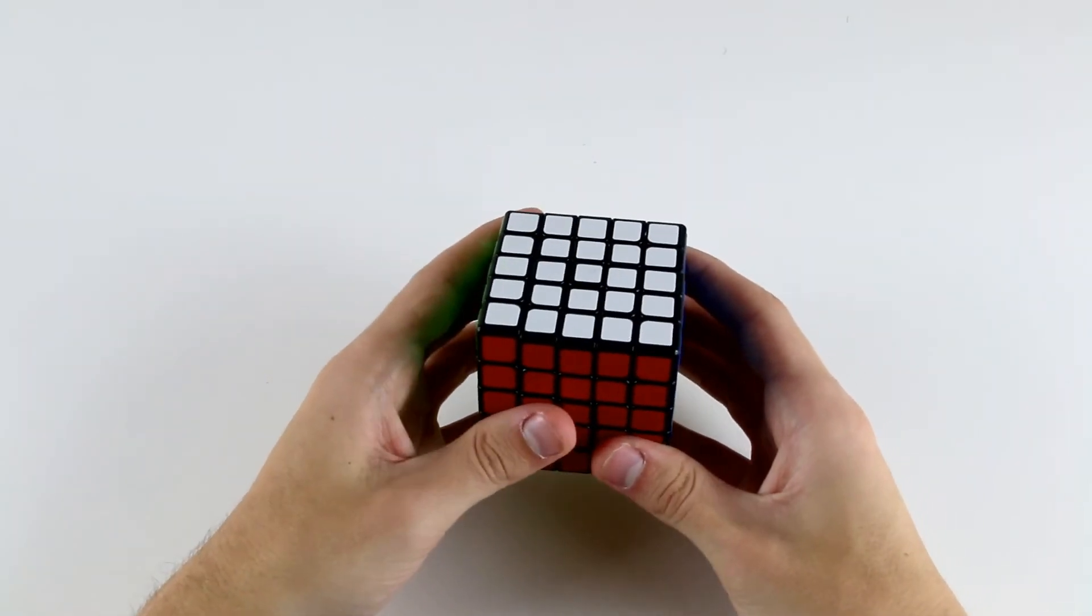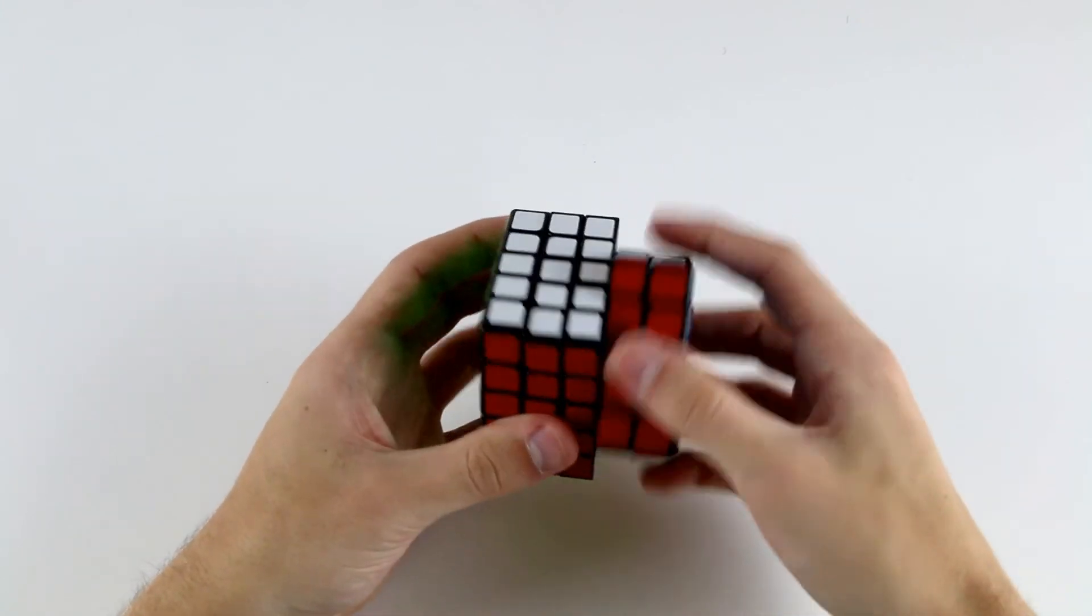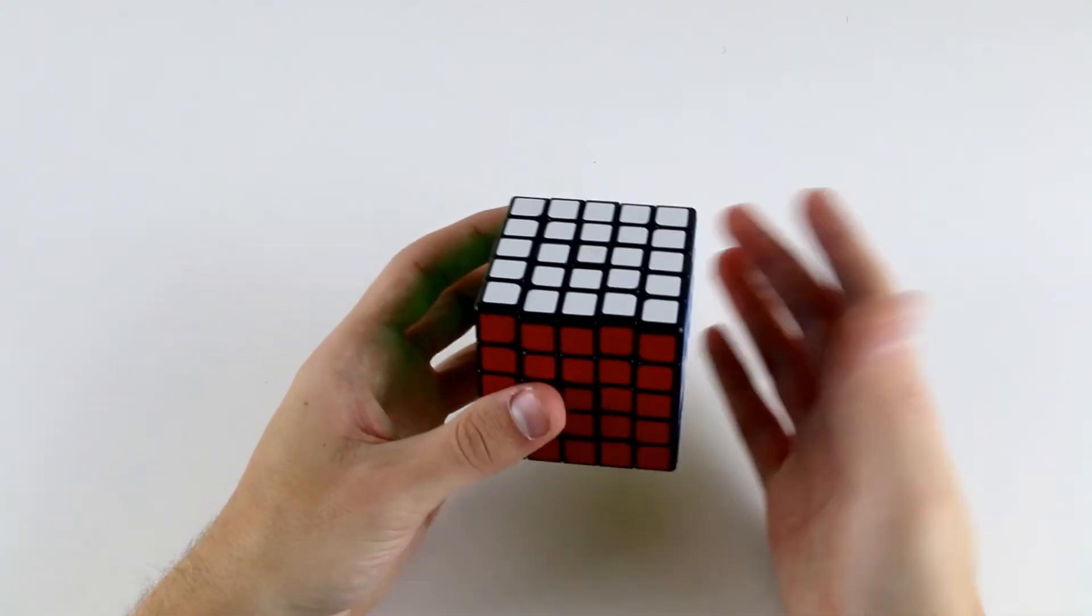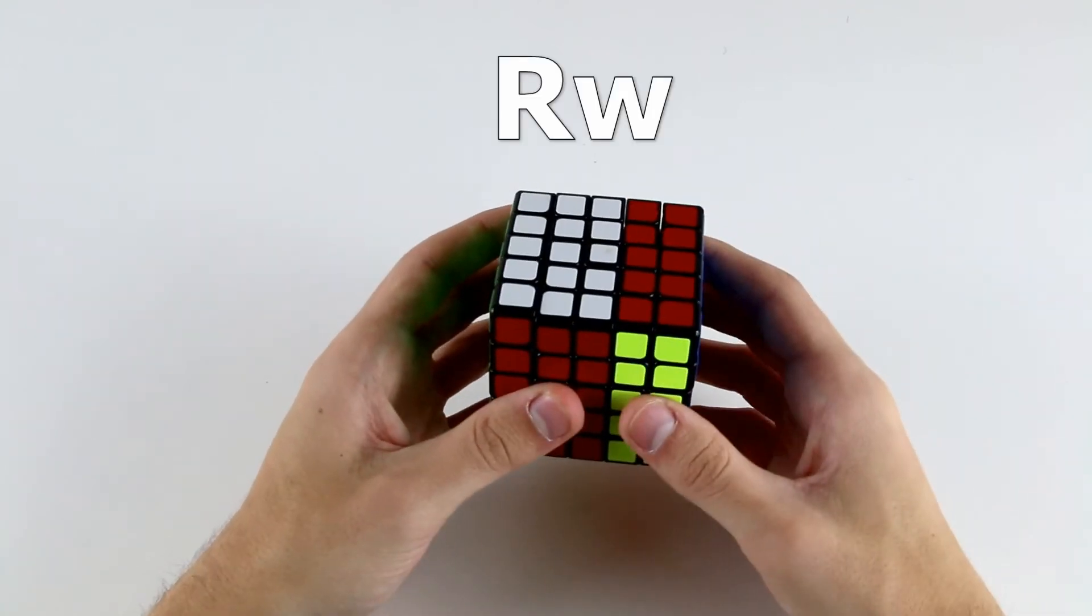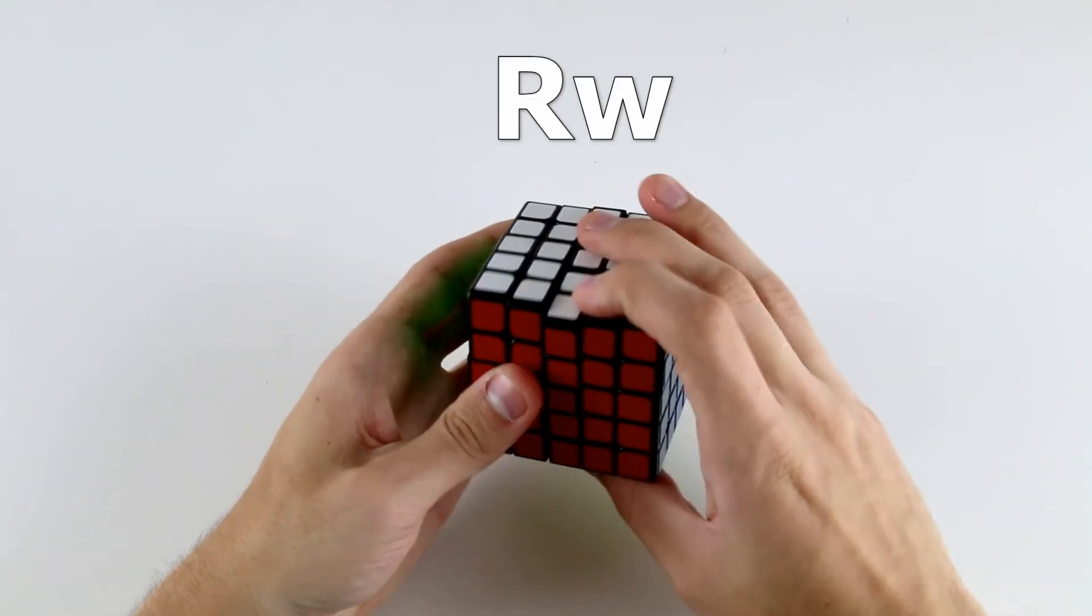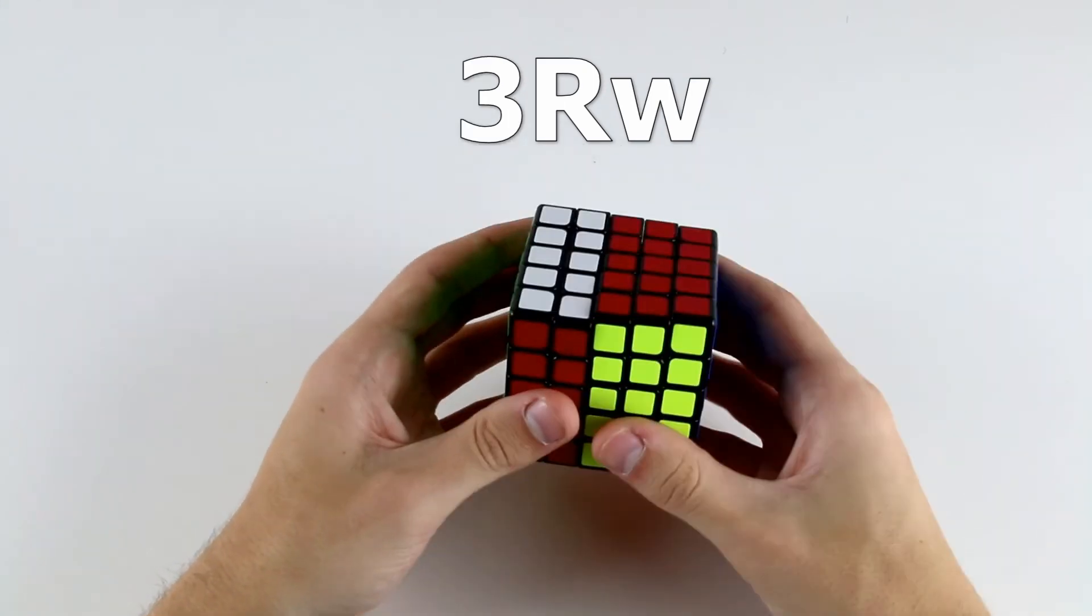The only addition to our notation set is that we need to be able to describe turning three layers as opposed to just two. Turning two layers is the same as on a 4x4 cube, it's just R wide, or RW. However, if we want to turn three layers, we put a 3 in front of that. So that's 3RW.